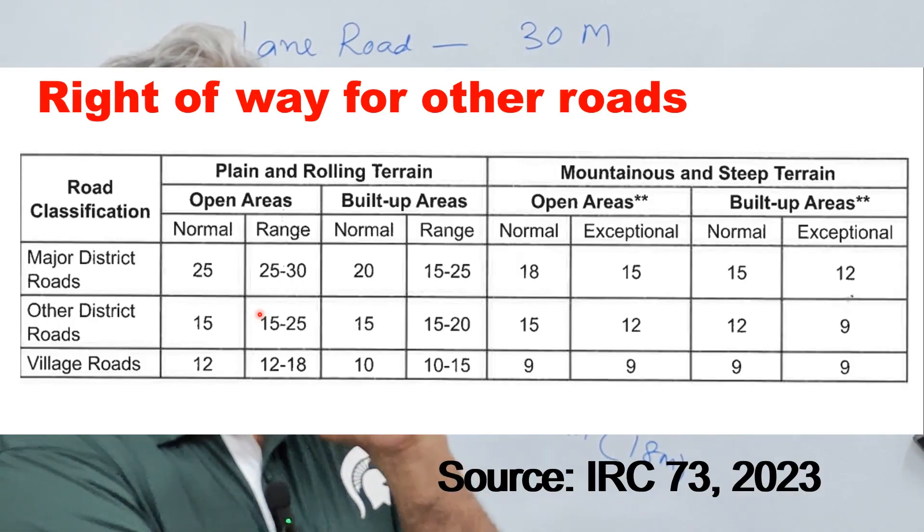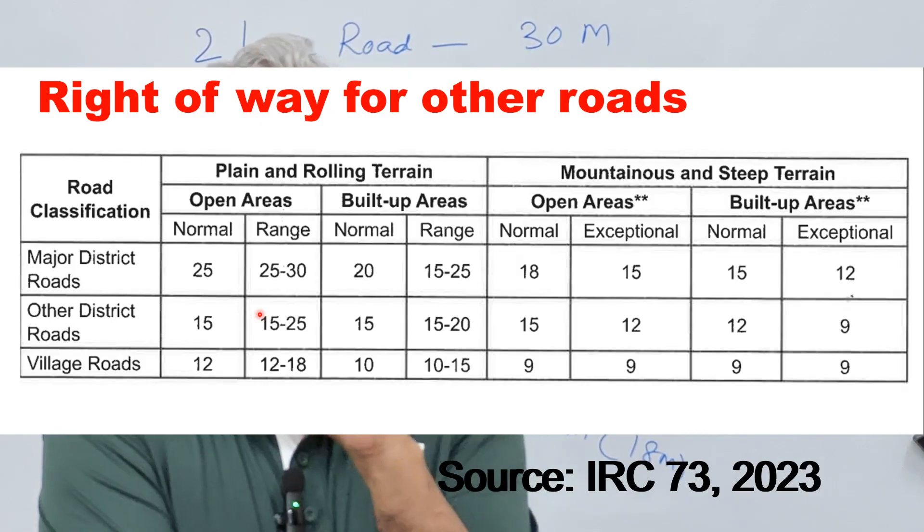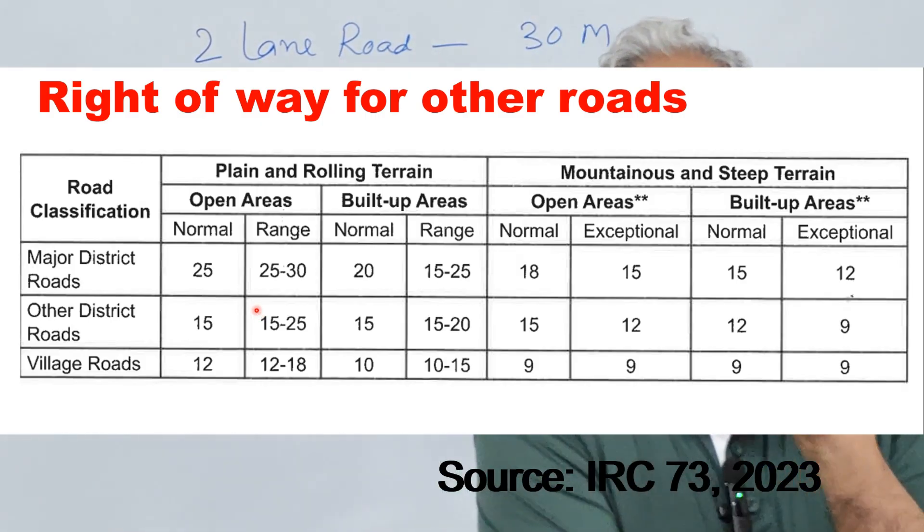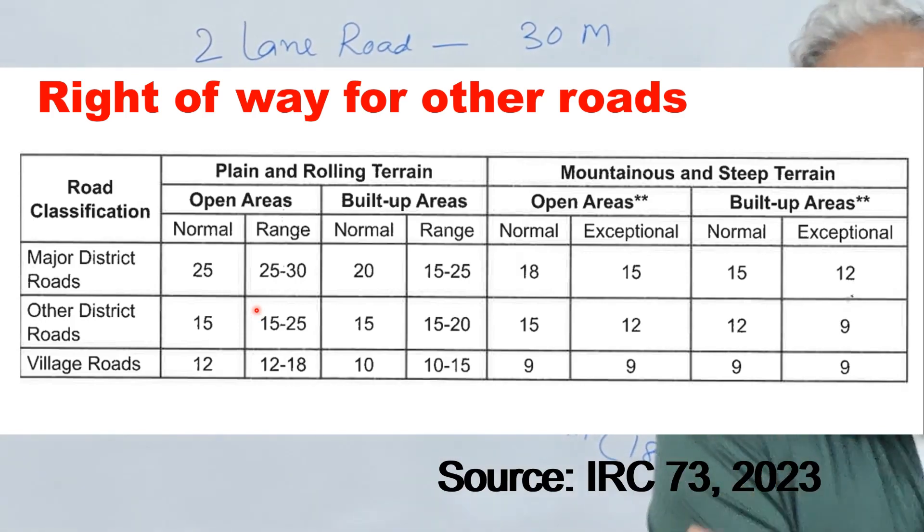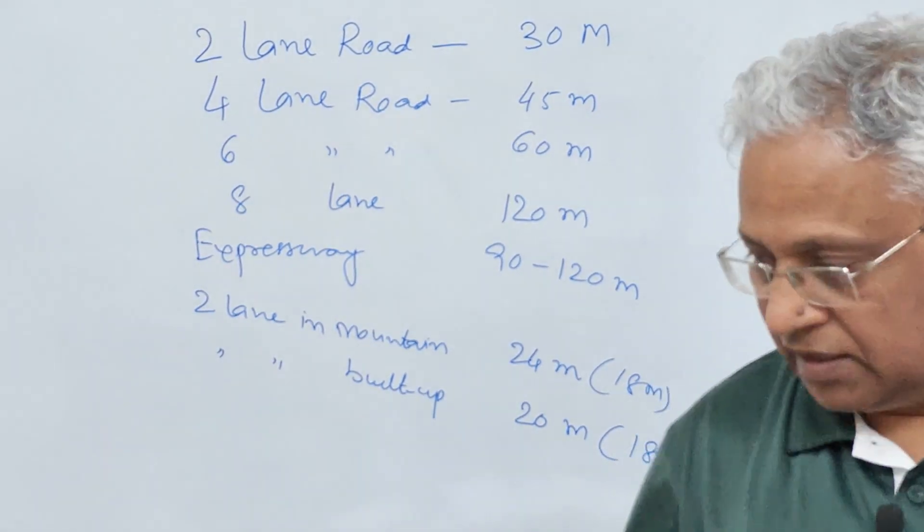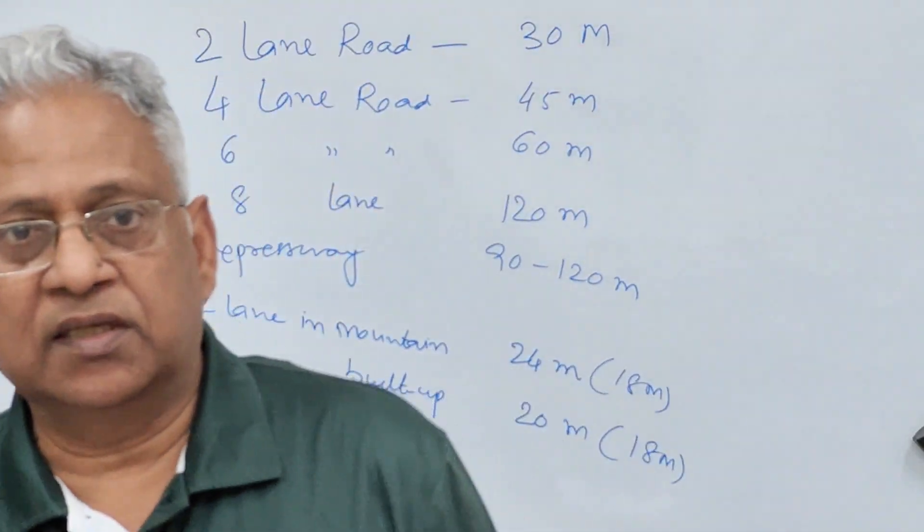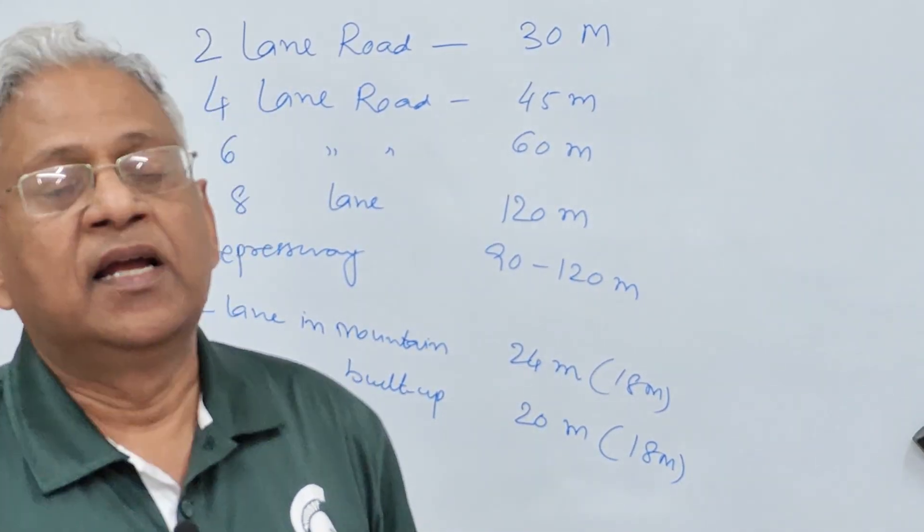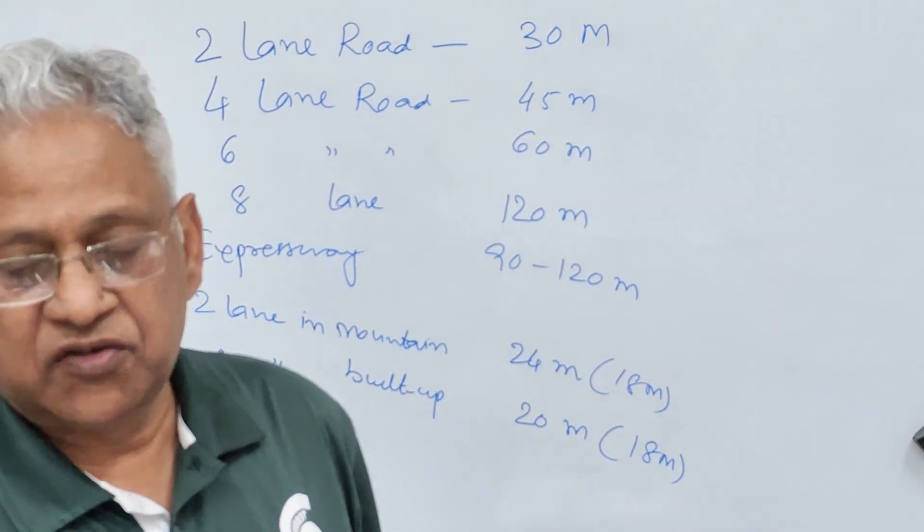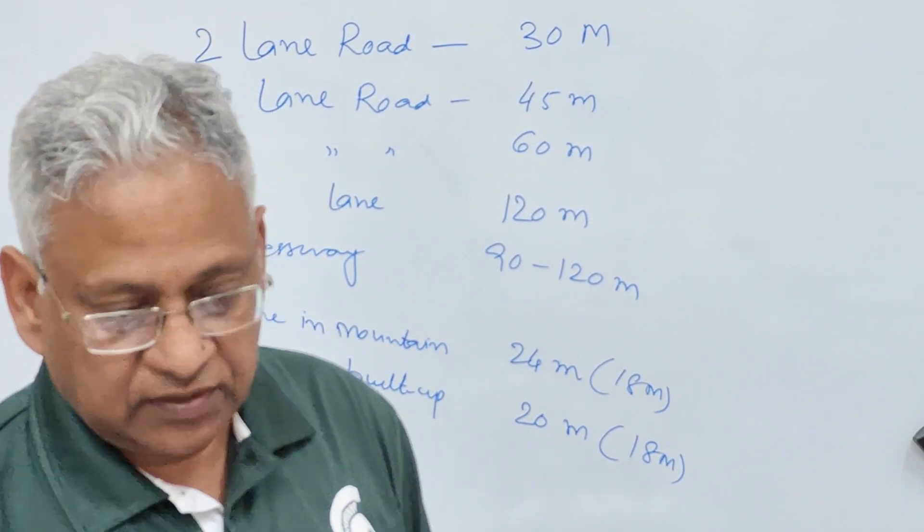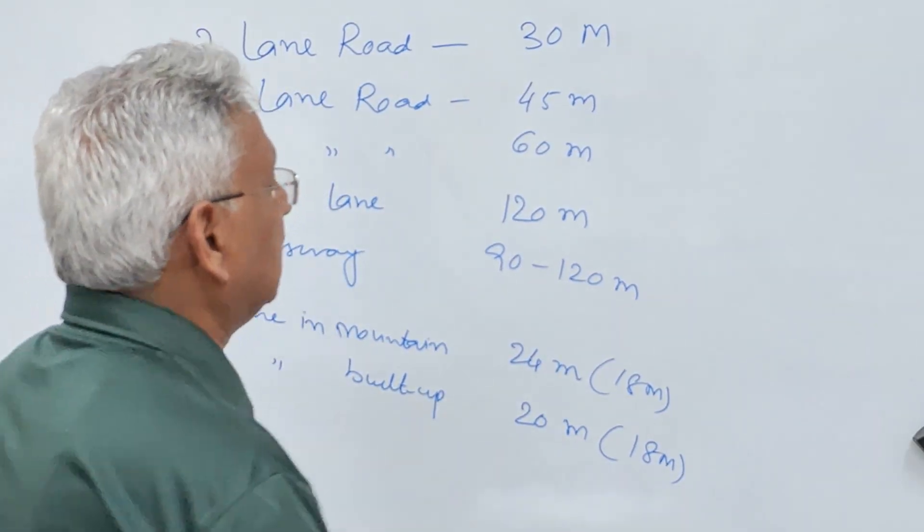And the need for a wider right of way at important road intersections should be kept in mind while acquiring the land initially. Now I will draw right of way for two categories of roads. Let us say a normal two lane road and a four lane road to illustrate different features of right of way or different features which are included in the right of way.